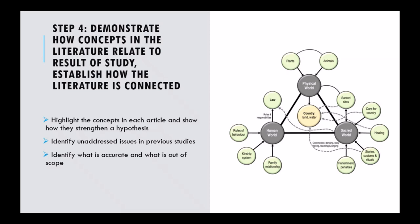Identify unaddressed issues in previous studies — show the gaps. You need to critique. You can't just take what's in the article and put it into your literature review — you have to critique it, show where the gaps are, show what you agree with and what you disagree with, and show the datedness of a study. This is the rationale and reason for why your study is currently needed. Collecting relevant resources will help you see what research has already been done and help you avoid duplication. You don't want to do a study that has already been done — you want to add to the body of knowledge.